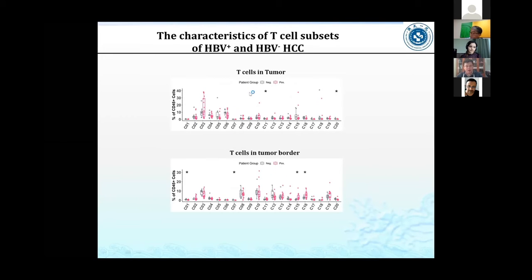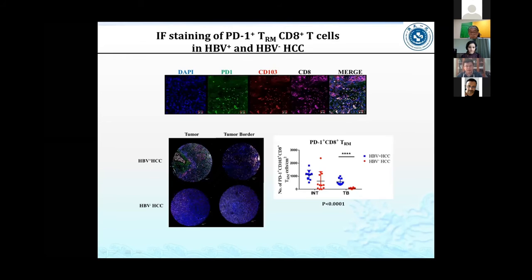Comparing all T cells in tumor and tumor border between HPV-positive and HPV-negative samples, in the tumor only C11 and C20 cells are different, and their percentages are quite low. However, in the tumor border, we do see four different T cell subsets, including C15 and C16. These two immune subsets express PD-1 and CD107, suggesting they are tissue-resident memory T cells.